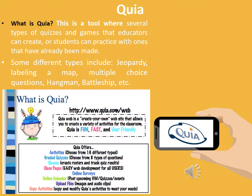Quia is a tool where several types of quizzes and games can be created by educators or practiced by students using ones already made. A school librarian can create a Jeopardy game based on different parts of a book, and students pair up and play Jeopardy style until all questions are answered and there is a winner. It's a fun way to engage students on a specific topic. Other formats available include labeling a map, multiple choice questions, hangman, and battleship.